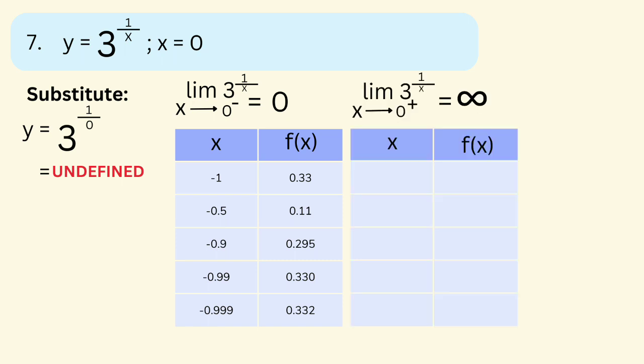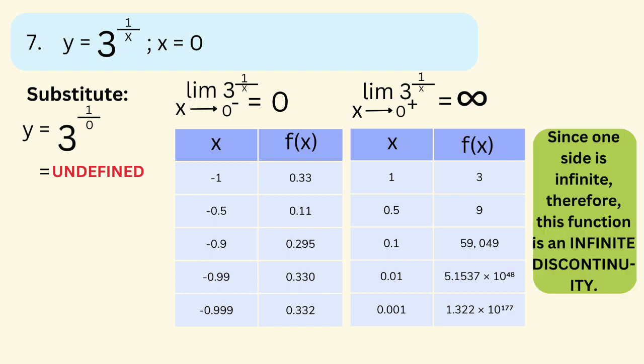Now we get the other side. The limit of y = 3^(1/x) as x approaches 0 from the right, with x values 1, 0.5, 0.1, 0.01, and 0.001. Substituting each: for 1 we get 3; for 0.5 we get 9; for 0.1 we get 59,049; for 0.01 we get 5.1537 × 10^48; and for 0.001 we get 1.322 × 10^477. So the limit as x approaches 0 from the right equals infinity. Therefore, this function is an infinite discontinuity.